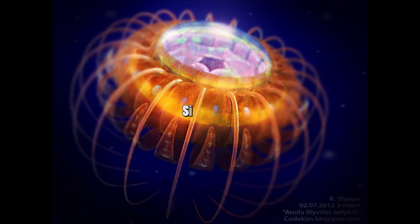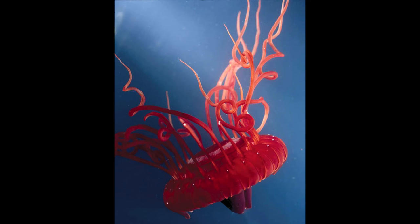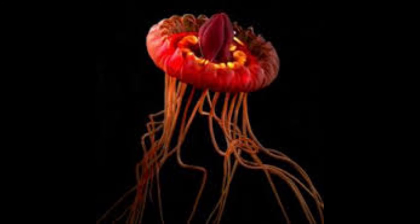Size. Atolla wyvillei's bodies measure as little as six-tenths of an inch across to 8 inches across. A wyvillei usually has 22 marginal tentacles around the rim of the body, and one hypertrophied tentacle, which might be 1.5 times to 36 times longer than the jellyfish's diameter.